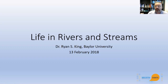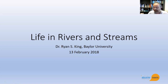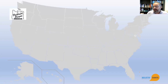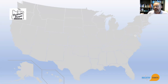My name is Dr. King and I'm a professor of biology at Baylor University, and we're going to talk about life in rivers and streams today. I was raised in Portland, Oregon, which is a place with many rivers and streams, and spending a lot of time outdoors with my father and doing a lot of fly fishing was one of the things that really inspired me to become an aquatic scientist.